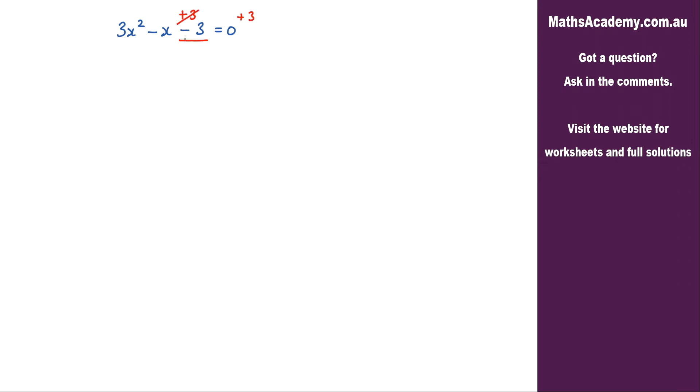Now this 3 here will cancel with this one, which will leave me with 3x² minus x is equal to 3.